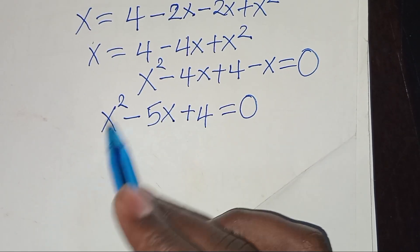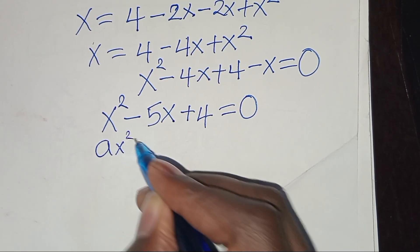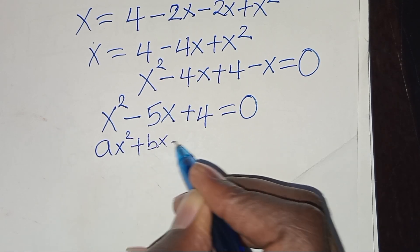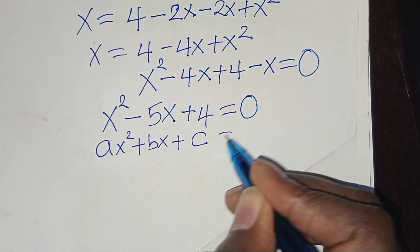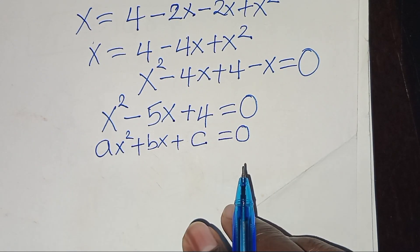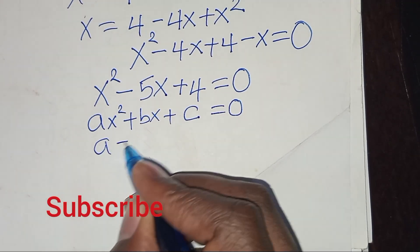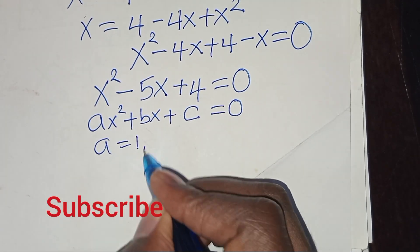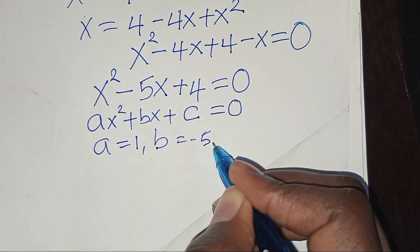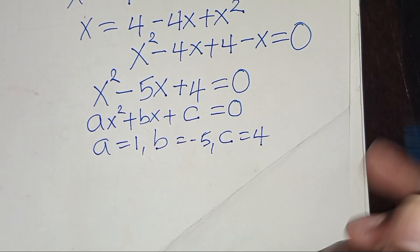This is a quadratic equation of the form ax squared plus bx plus c equals 0, where a equals 1, b equals negative 5, and c equals 4.